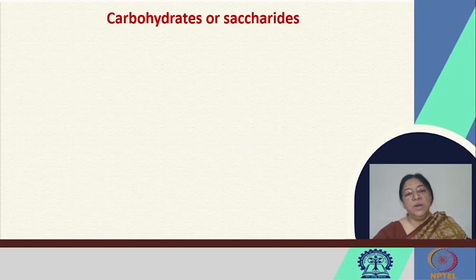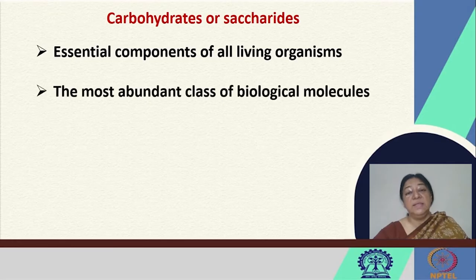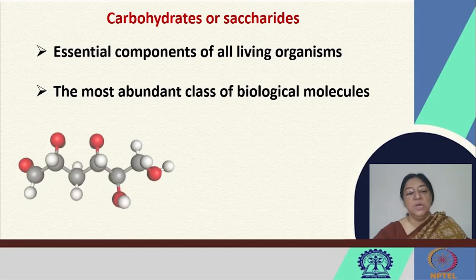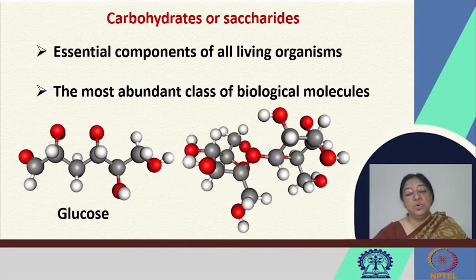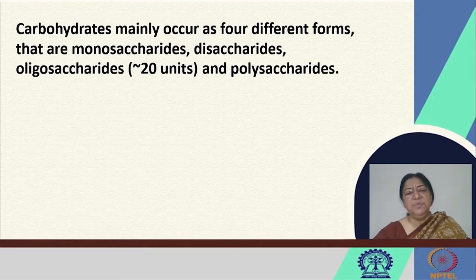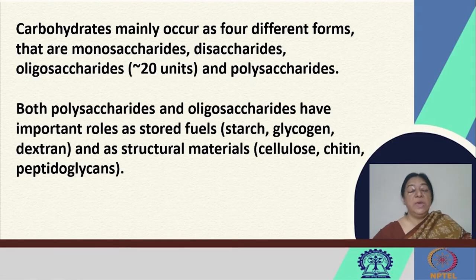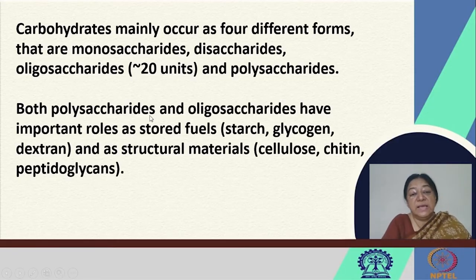When we look at carbohydrates or saccharides in general, they are the essential components of all living organisms and the most abundant class of biological macromolecules. We have glucose and sucrose as two very common carbohydrates. Carbohydrates occur mainly in four different forms: monosaccharides, disaccharides, oligosaccharides (about 20 units), and polysaccharides. When looking at how they interact with proteins, we focus on polysaccharides and oligosaccharides.